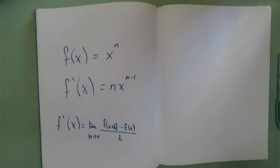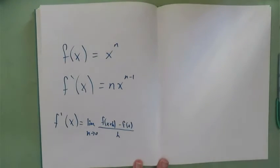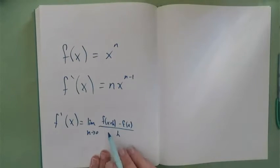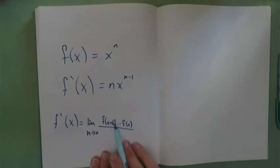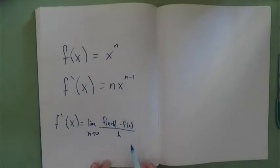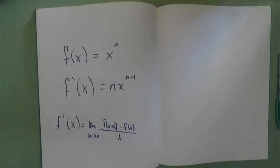All right, now let's prove that the general power function works. So our definition is, what is the value of y if we nudge x a little bit minus the value of y at the specific value of x we're concerned with? So we're looking at what is the slope at some value of x.